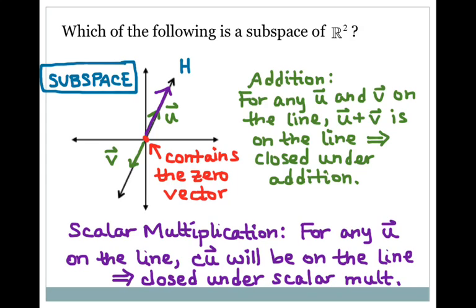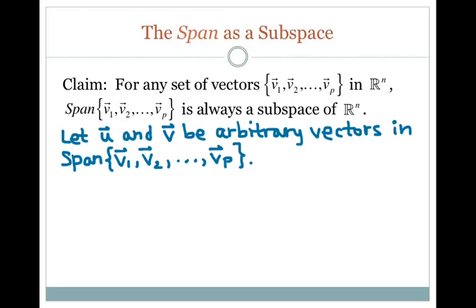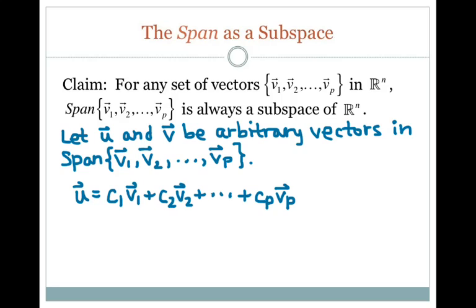Now let's look at an example of something that is always a subspace, and that's the span. My claim is that for any set of vectors v1 through vp in Rn, the span of those vectors is always a subspace of Rn. Let's recall what it means to be in the span of some vectors. If we have u and v as vectors in the span, that means each one can be written as a linear combination of v1 through vp. So u equals c1·v1 plus c2·v2 plus c3·v3 all the way to cp·vp, where the c's are real number scalars.